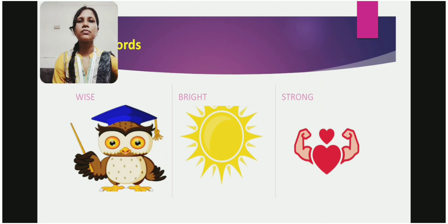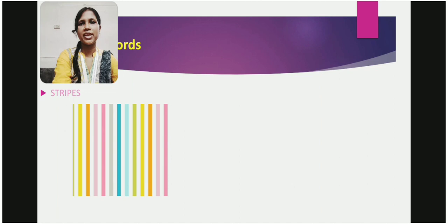Now, our last word is Stripes. S-T-R-I-P-E-S. Stripes. As you can see in this picture, these are the long colored stripes, long colored lines. These are called as the stripes. Dear students, I hope that all these seven new words are clear to you.